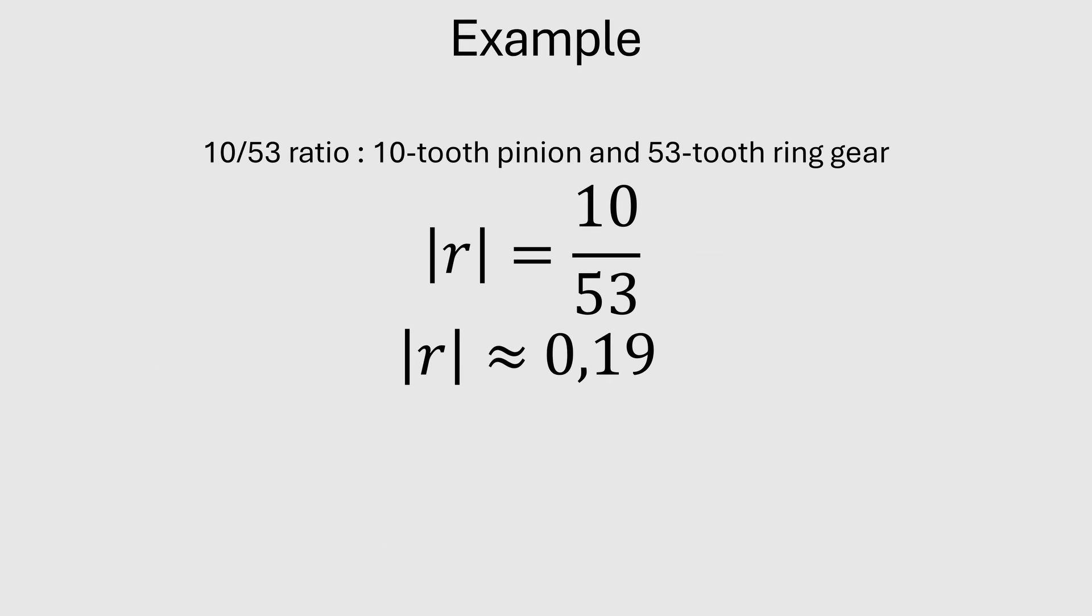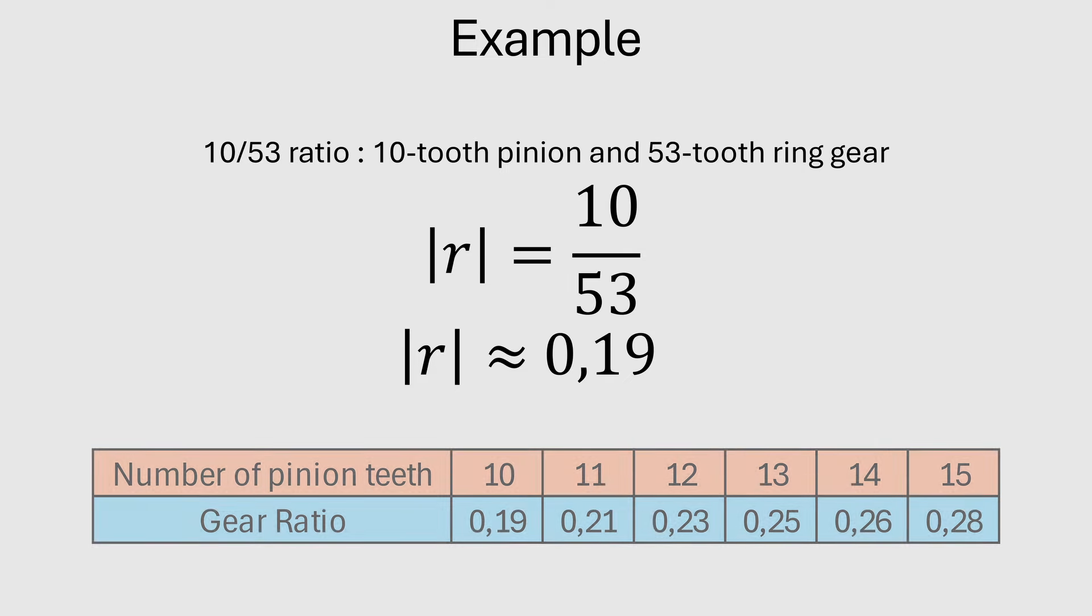Let's take the example of a 10/53 Mini-Z. The ratio is 0.19. We can do this calculation on a whole range of pinions.